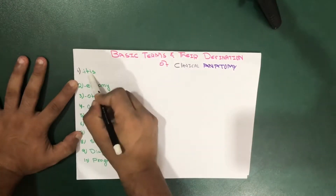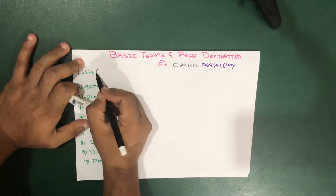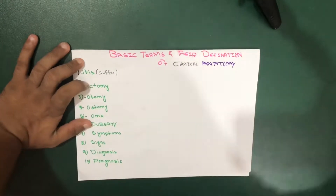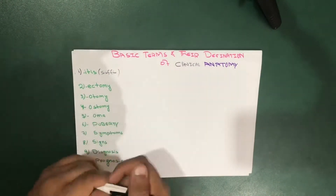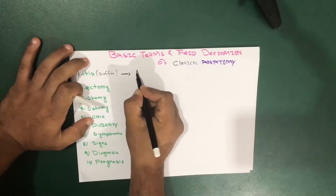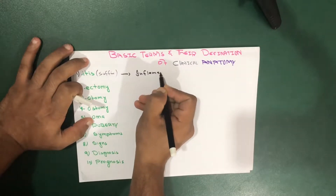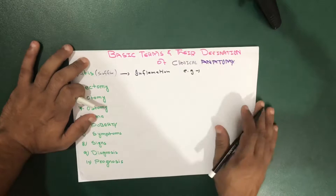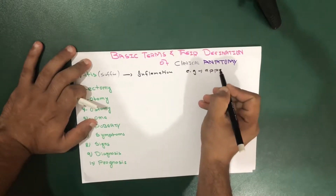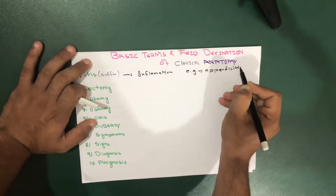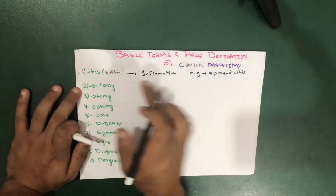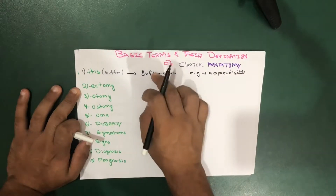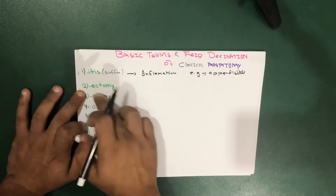We will start with the word '-itis'. This word is used as a suffix, and it means inflammation. For example, 'appendicitis', which means inflammation of the appendix. So '-itis' is actually telling us that it's an inflammation, and it's used as a suffix.